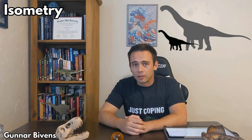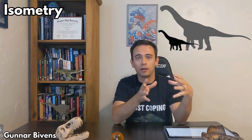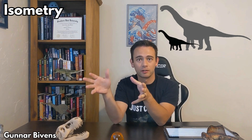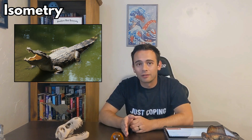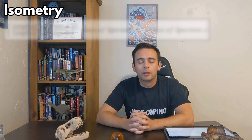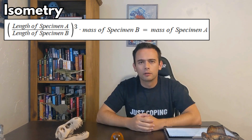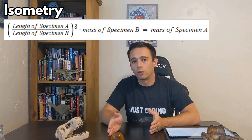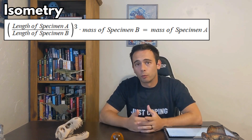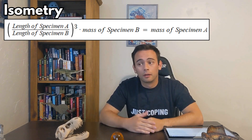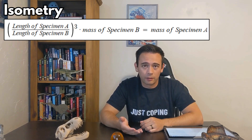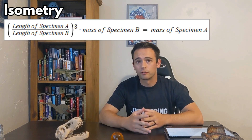The last method within extant scaling is isometry. Isometry means equal measure and assumes that one individual of a species will have the same proportions as a different individual of that species at a different size — which can be incorrect, but sometimes it's all you have to work with. With groups of animals that still have living representatives like crocodilians, you can plug their different lengths into the square cube law formula to get an idea of the mass difference. The square cube law states that as an object's surface area increases linearly, its volume increases cubically, so a cube twice the length of another won't have twice the volume but eight times the volume.